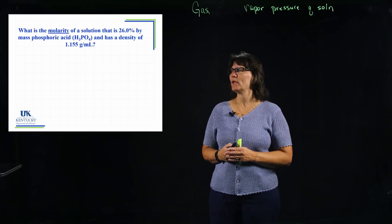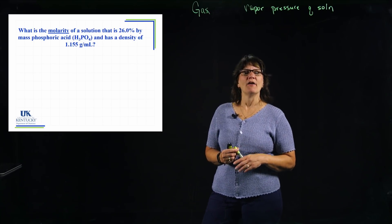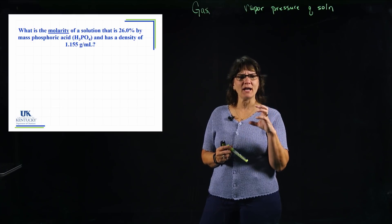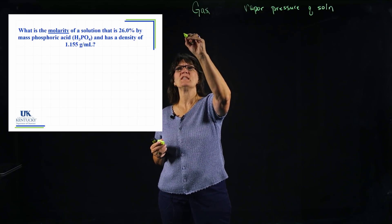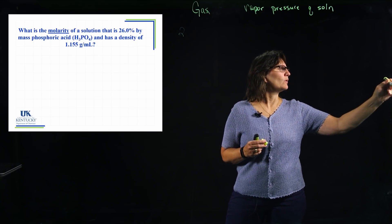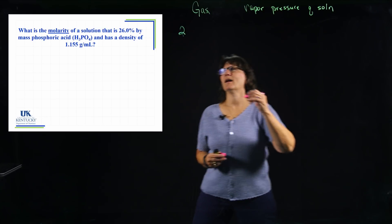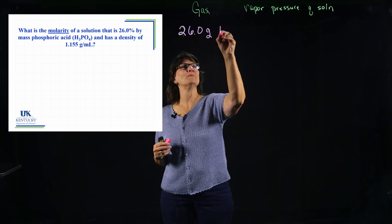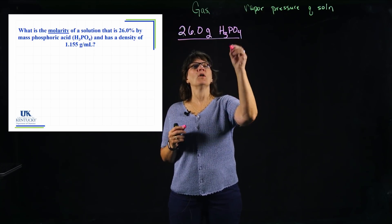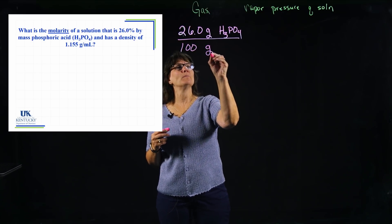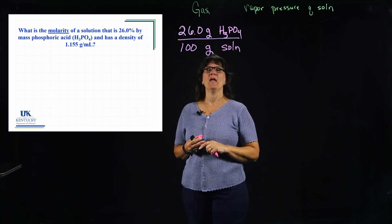Let's do a conversion. I want to know the molarity of the solution given a percent by mass. If you look back at the rules: 26% doesn't look like a fraction, but it is. We write it out very specifically as a fraction — 26.0 grams of H₃PO₄ over 100 grams of solution, because percent means out of 100. Be specific in both numerator and denominator.